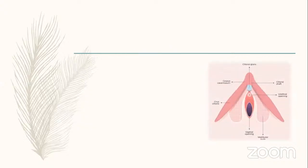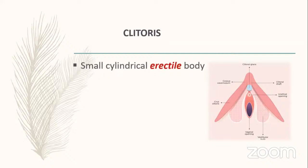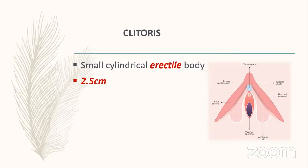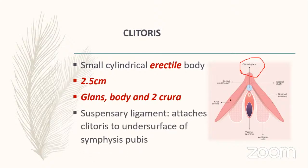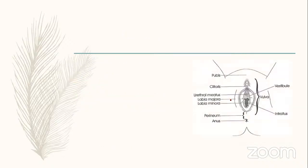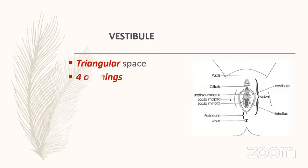The clitoris is a small cylindrical erectile body — it is the erectile tissue of the female genital tract. It is 2.5 cm in length. Parts of the clitoris are: the glans, the body, two crura, and a suspensory ligament that attaches the clitoris to the undersurface of the symphysis pubis.